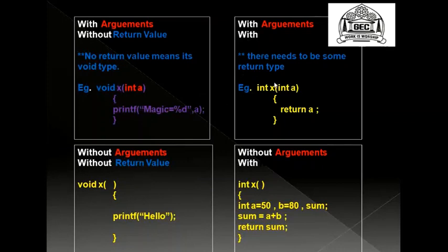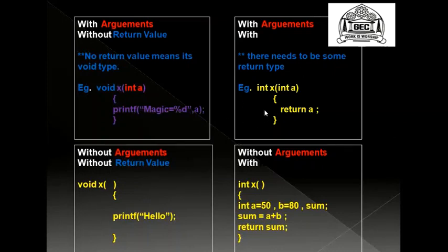Now here I have a return type and arguments — this is with return value. Because it has a return type, there has to be something specified. For now I say int. Note that the default return type is int — if you had not written void and just left it as x, you would interpret the default return type as int. Since there is a return type, you will have to return something. In this case, you are returning 'a'.